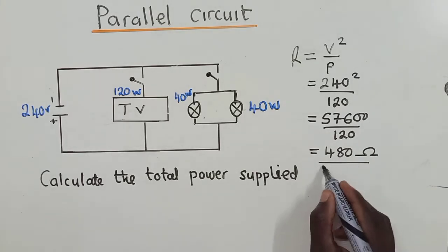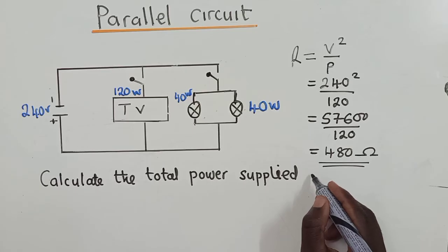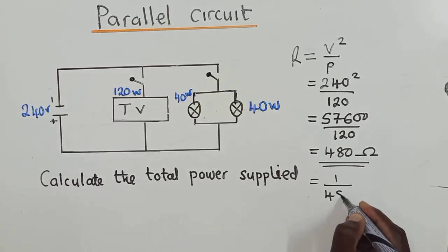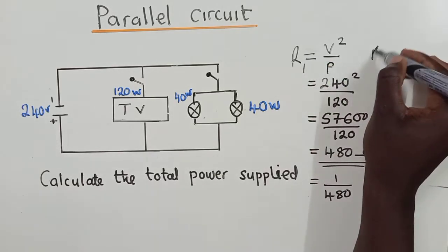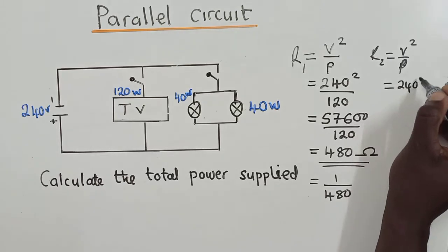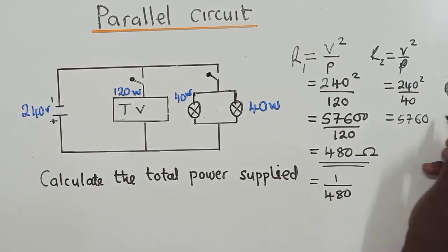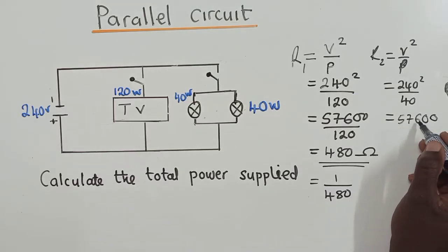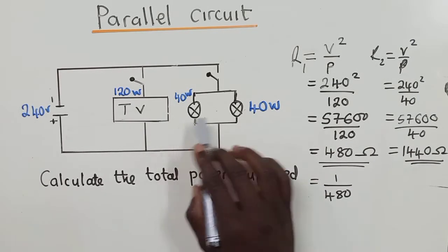Since this is a parallel circuit, we note the resistance as 1/R1. For the second resistance R2, we do the same procedure: R2 = voltage squared over power = 240 squared over 40. That gives us 57,600 over 40, which equals 1,440 ohms. So this is our R2.